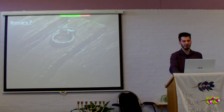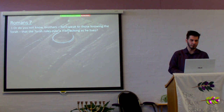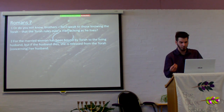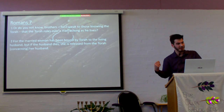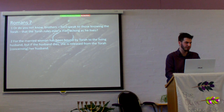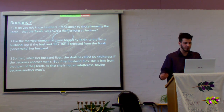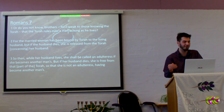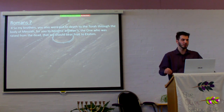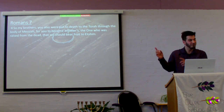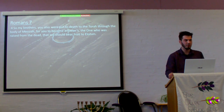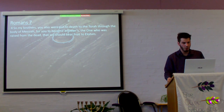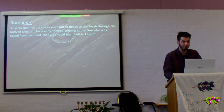Which leads us to Romans 7: 'Or do you not know, brothers — for I speak to those knowing the Torah — that the Torah rules over a man as long as he lives? For the married woman has been bound by Torah to the living husband. But if the husband dies, she is released from the Torah concerning her husband. So then, while her husband lives, she shall be called an adulteress if she becomes another man's. But if her husband dies, she is free from that part of the Torah. So, my brothers, you also were put to death to the Torah of marriage — not to the Torah in general — through the body of Messiah, for you to become another's, the one raised from the dead, that we should bear fruit to Elohim.'